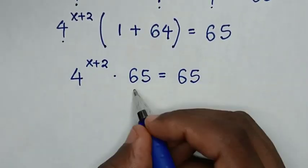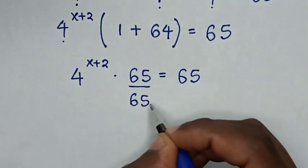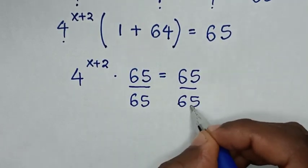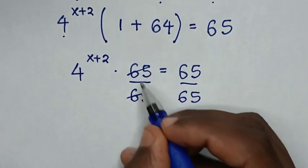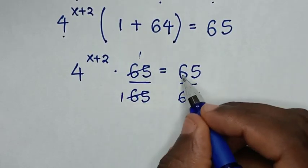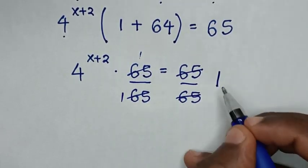Then in the next step, we divide by 65 on both sides. So 65 will cancel each other by 1, and here by 1, and here also by 1, so it will be equal to 1.